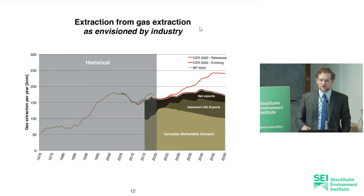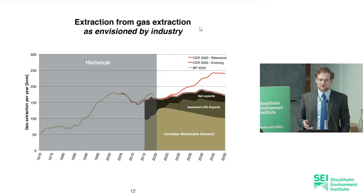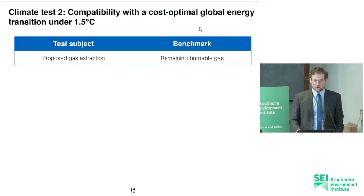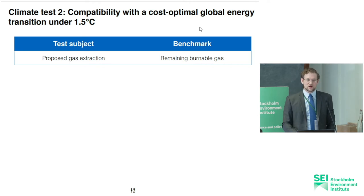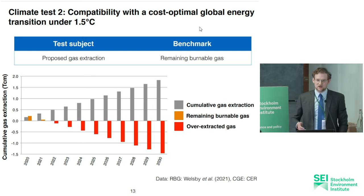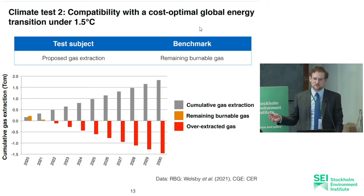First we need the forecasted extraction. I'm using the Canada Energy Regulator forecast, which is pretty industry favorable but from the Natural Resources department of the government. I'm using their evolving scenario, which does see some sort of peak and decline but still a lot of gas. For the first test, we compare this to the Welsby and colleagues results from Nature, and you can see that under a cost optimal energy transition, Canada has very little gas left and we'd already be over-extracting this year if we continued along the evolving scenario.